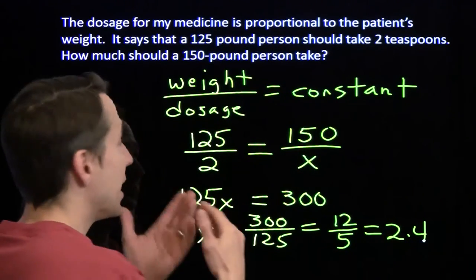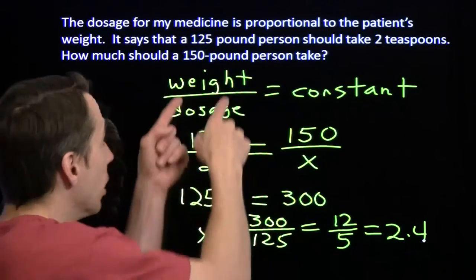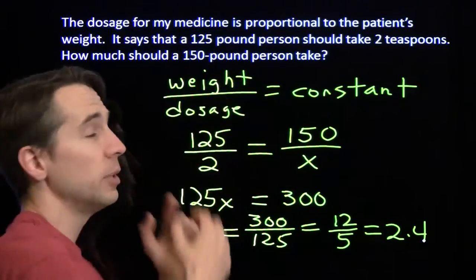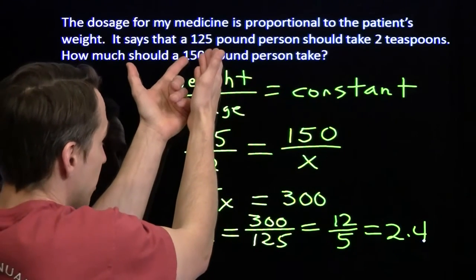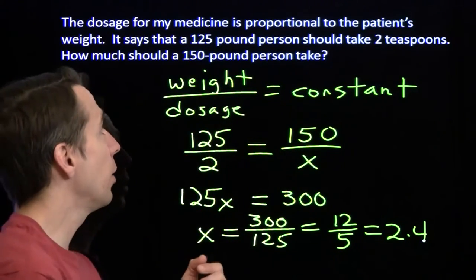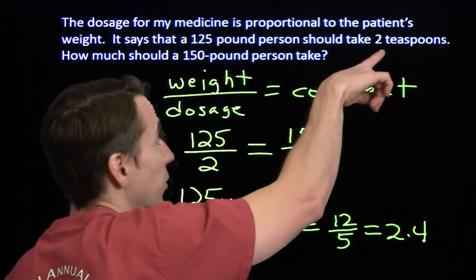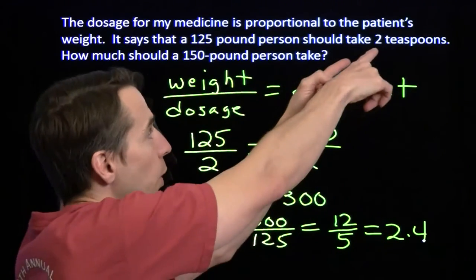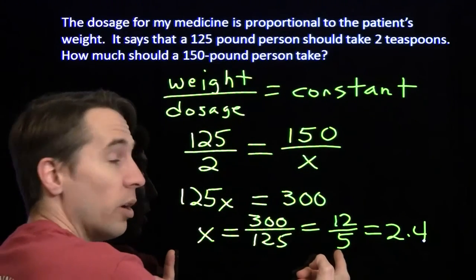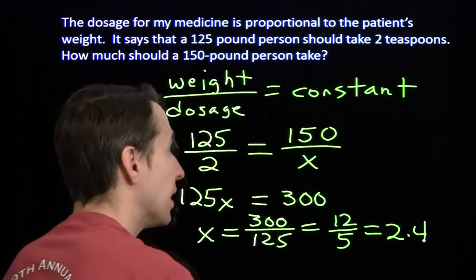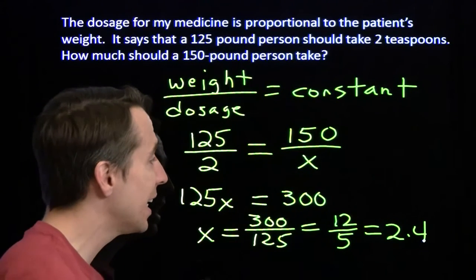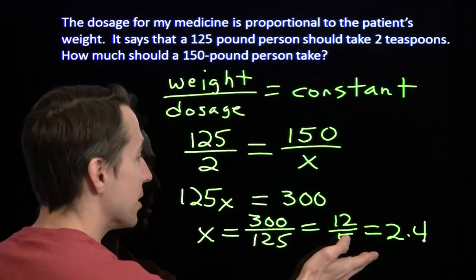Of course another way we could have thought about that is by scaling. We scale the 125-pound weight up to my weight at 150 pounds by multiplying by 6 fifths — 125 times 6 fifths gives 150. So we have to scale the medicine up as well: 2 teaspoons times 6 fifths gives 12 fifths, which is 2.4 teaspoons. Now I got through that video okay, so I must have taken exactly the right amount of medicine.